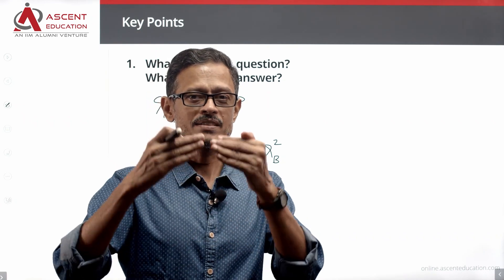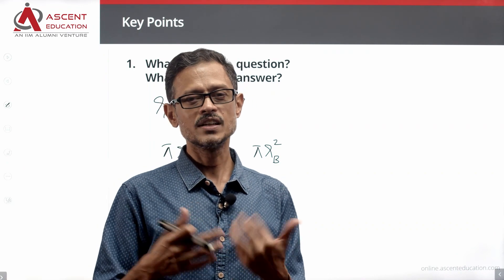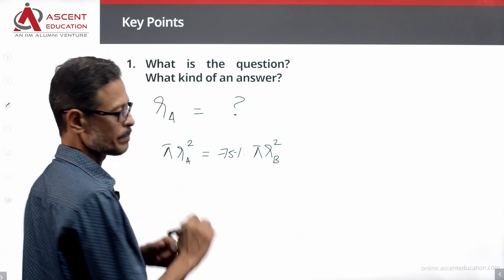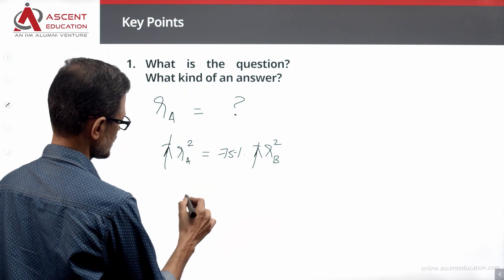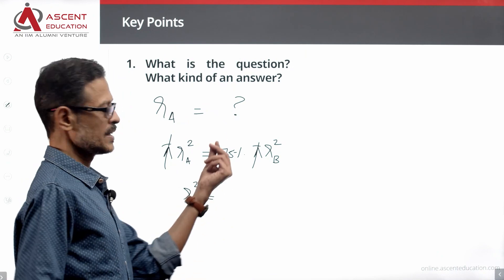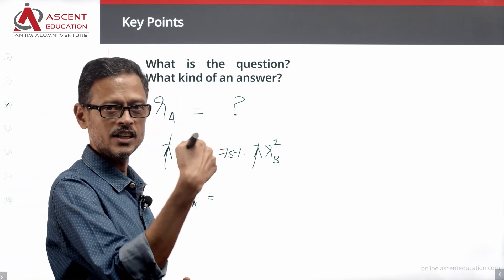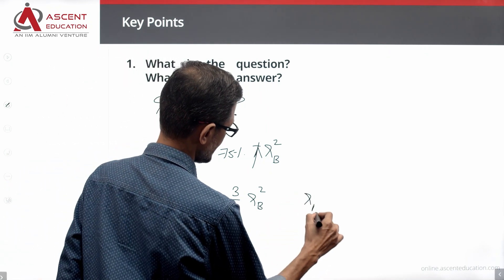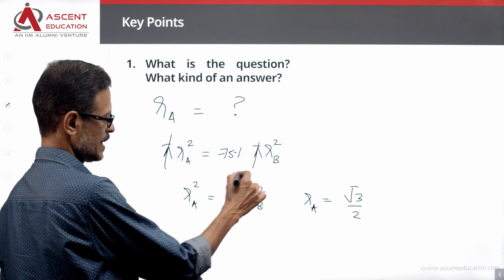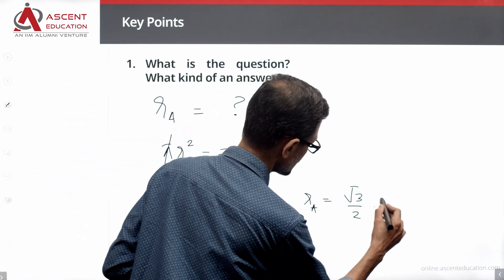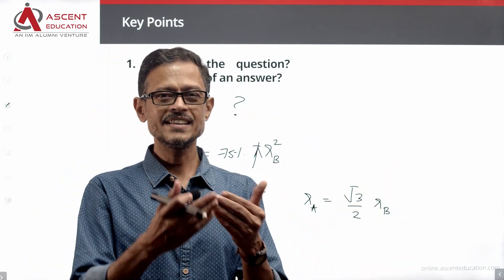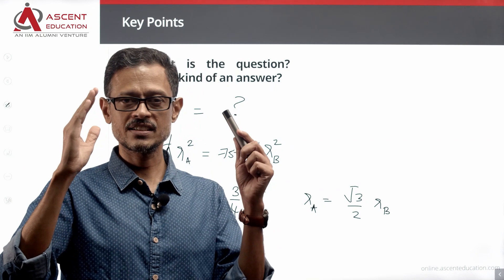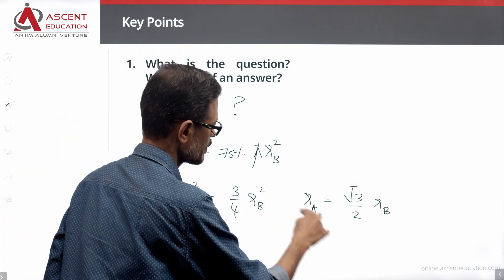Since circle A's area is 25% less than circle B's area, circle A's area is 75% of circle B's area. Dividing both sides by pi, Ra² = (75/100) × Rb² = (3/4) × Rb². Taking the square root, Ra = (√3 / 2) × Rb. So if we know the radius of circle B, we can find the radius of circle A.